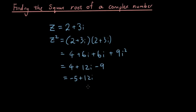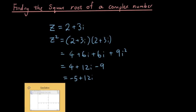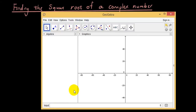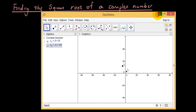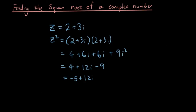The answer is negative 5 plus 12i. I want you guys to test it out in GeoGebra, just see if it's the same. So if I do 2 plus 3i in GeoGebra and I square it, I get negative 5 plus 12i, which is correct.